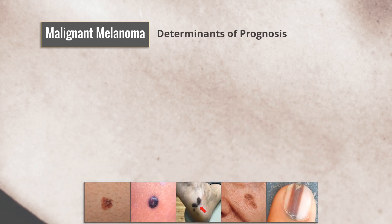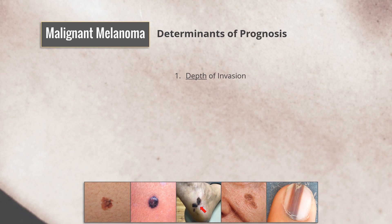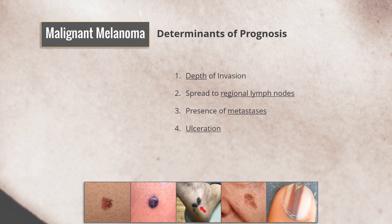Determinants of prognosis: there are several determinants which, if present, indicate poor prognosis. Depth of invasion is the most important factor. Breslow's thickness is the thickness of the tumor beneath the epidermis and correlates inversely with prognosis. Other determinants of poor prognosis include spread to regional lymph nodes, presence of metastases, and ulceration.